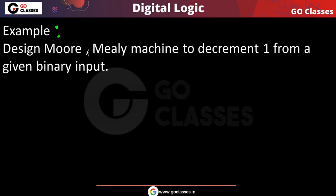Let us see this problem: design a Mealy machine and Moore machine to decrement a binary number by 1. In the last lecture we created a Mealy machine and Moore machine to increment a number by 1. Now let us see how to decrement a number by 1.